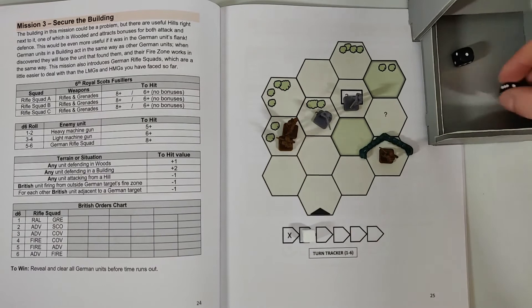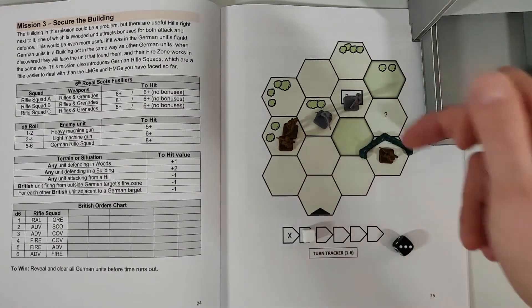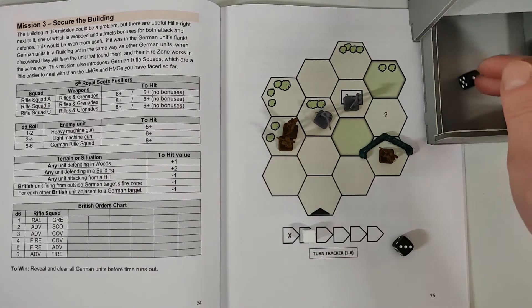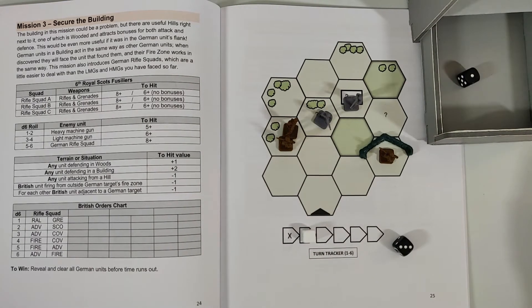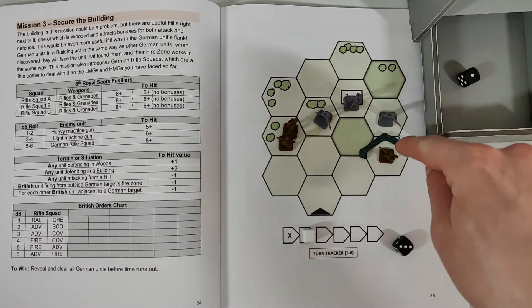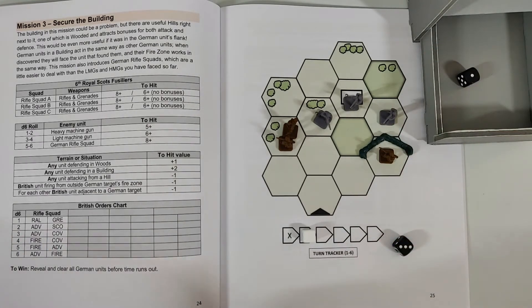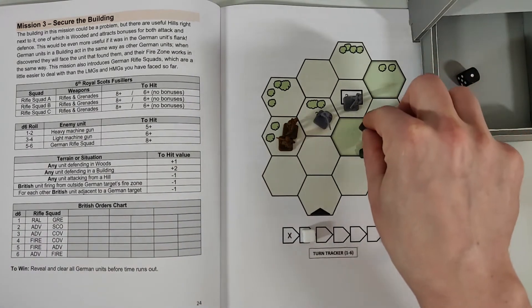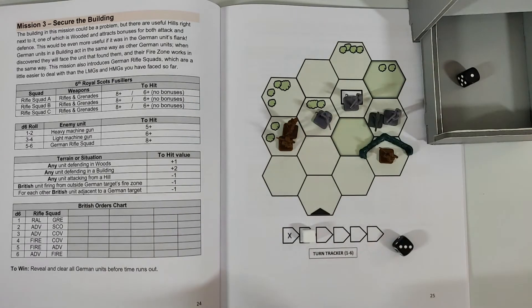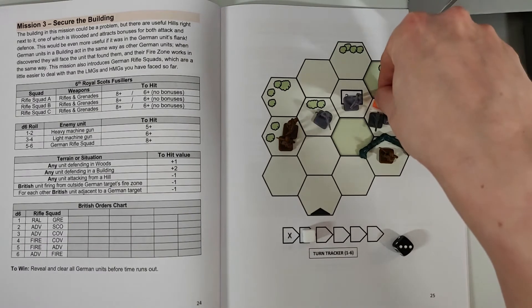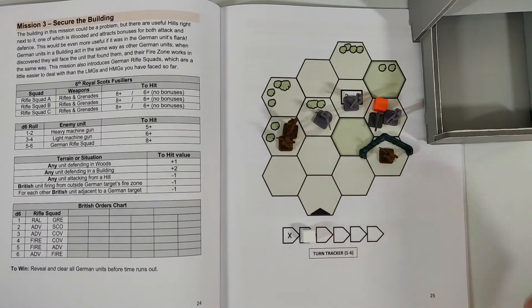And now there is gonna be an automatic spawn of an enemy since we moved adjacent to a question mark. And let's see here, that's gonna be a one, so that is gonna be a heavy machine gun, and it's gonna point towards the unit which discovered it. So we put an infantryman with a heavy machine gun here, and then I'm also gonna go ahead and put one of these orange cubes to note that it's a heavy machine gun.